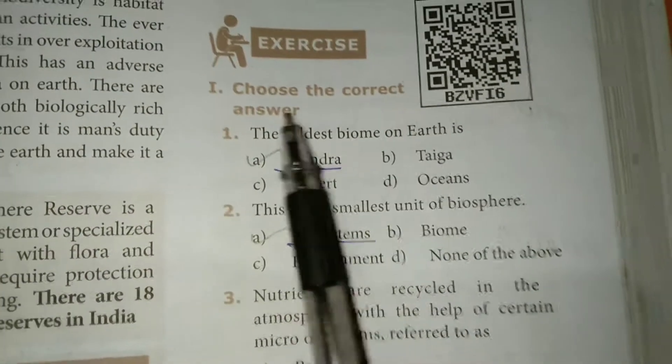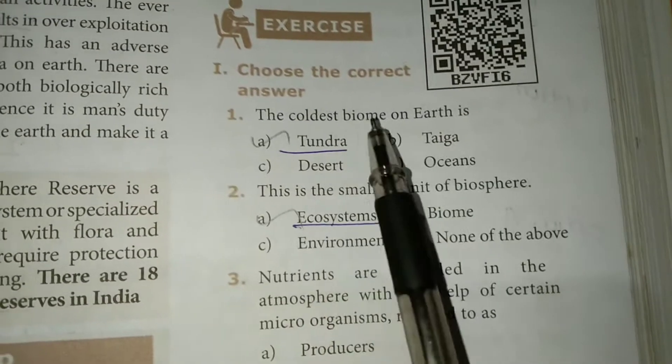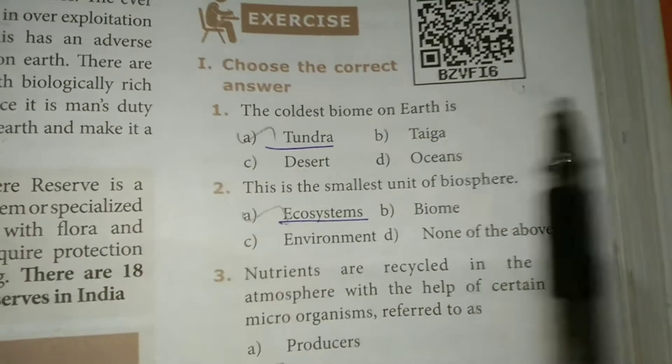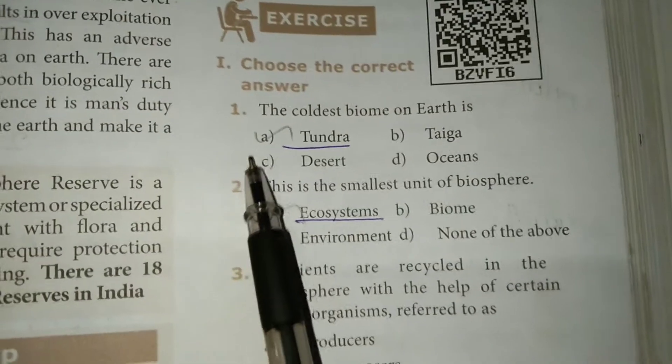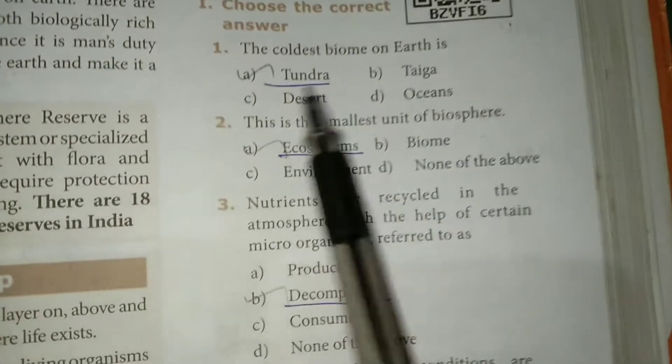Choose the correct answer. First one: the oldest biome on Earth. The answer is option A — Tundra.